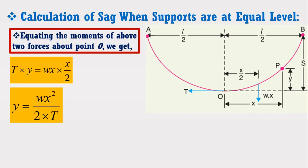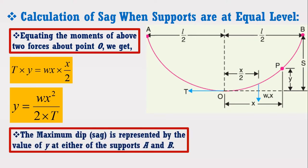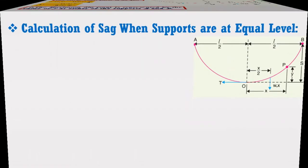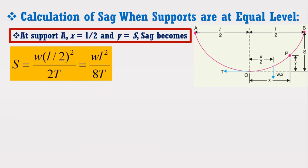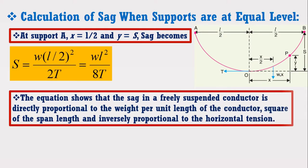The maximum dip or sag is represented by the value of Y at either of the supports A or B. At support A, X is equal to L upon 2 and Y is equal to S. Therefore, sag S becomes: S is equal to WL squared upon 8T. This equation shows that sag is directly proportional to the weight per unit length of the conductor and the square of the span length, and inversely proportional to the horizontal tension.